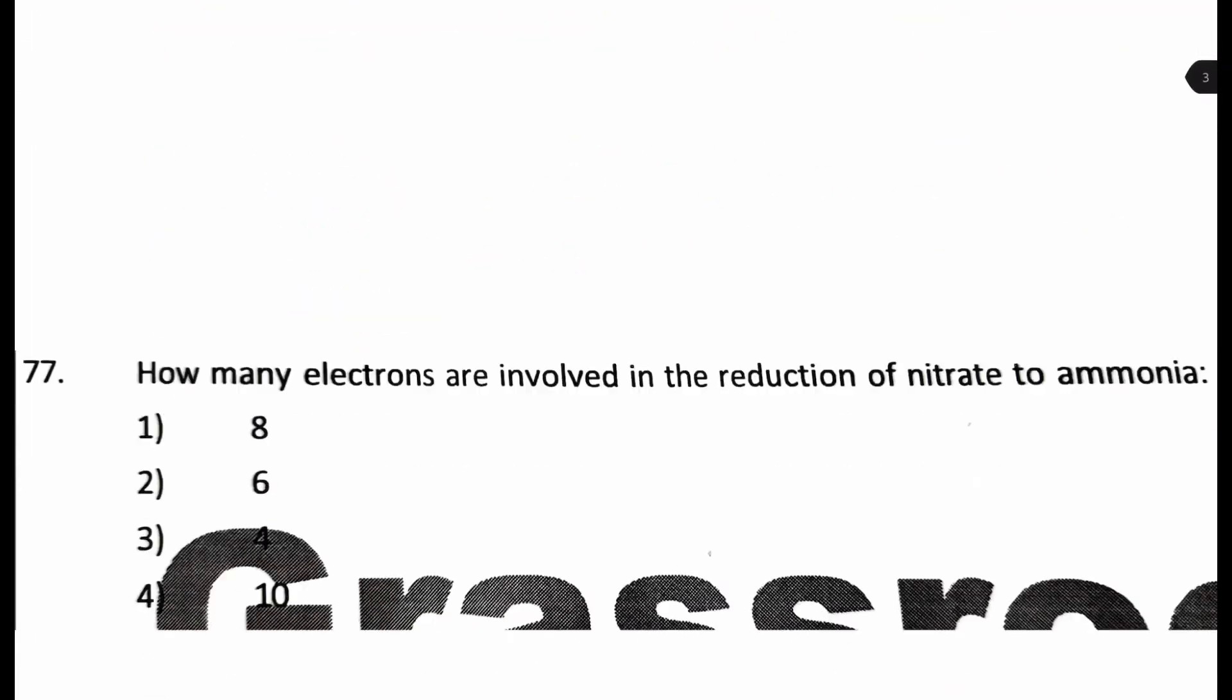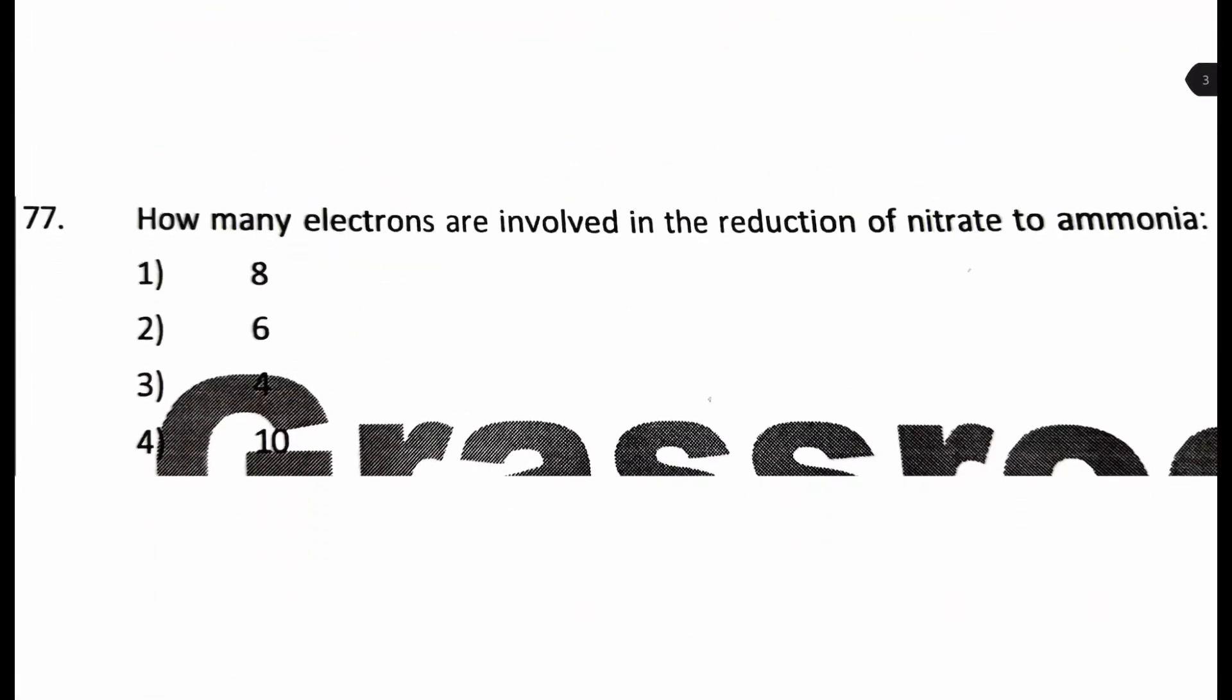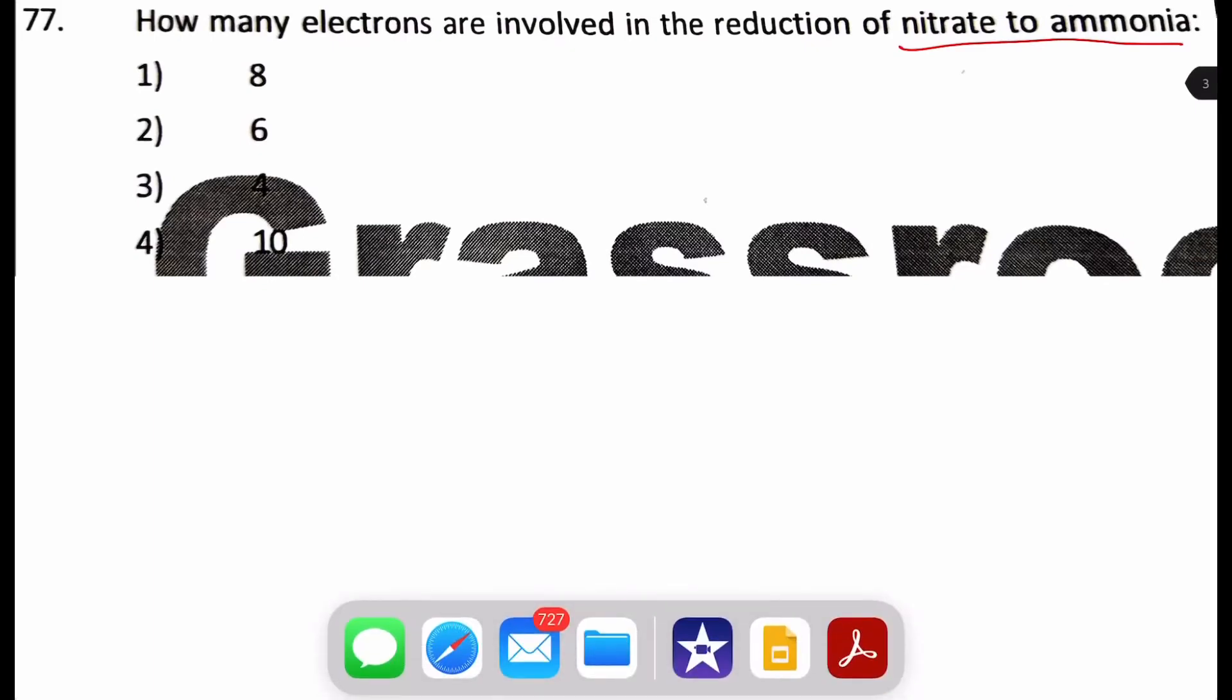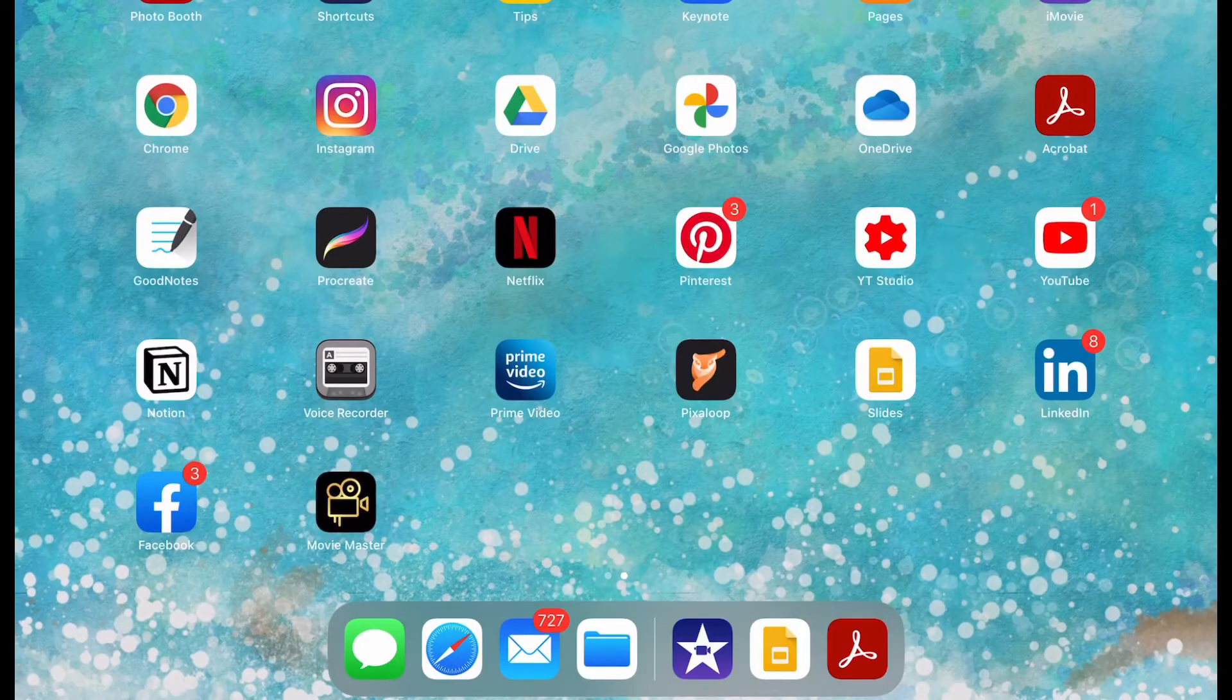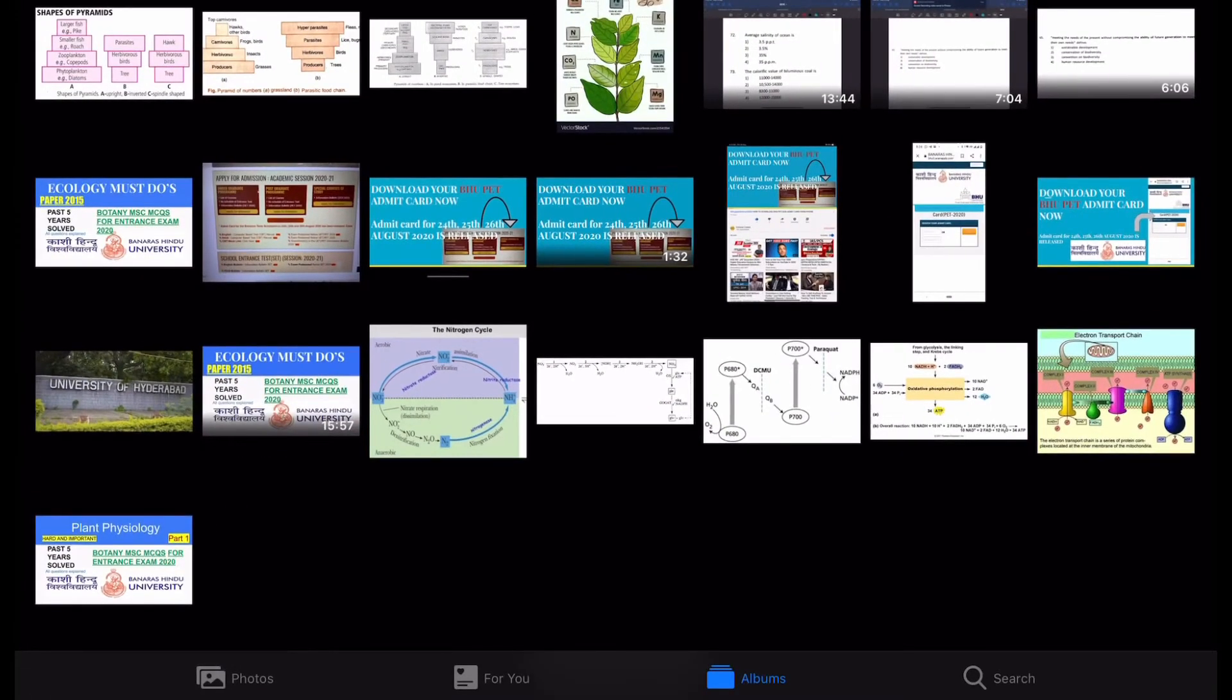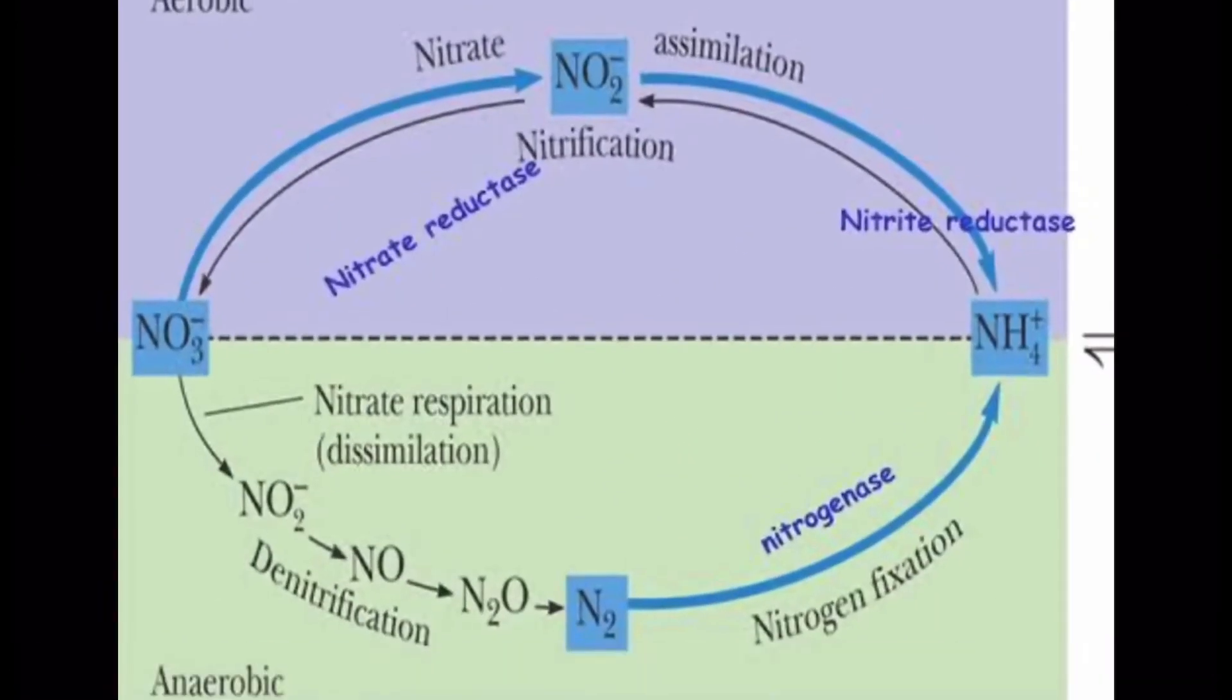Next question. How many electrons are involved in the reduction of nitrate to ammonia? Okay, so this is a difficulty level question. So we have to know the reactions from nitrate to ammonia. There are, this occurs in two pathways, right? First nitrate to nitrite, then nitrite to ammonia. We will see a picture here.